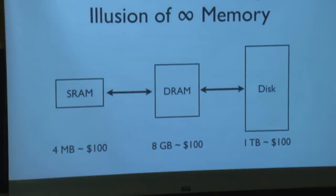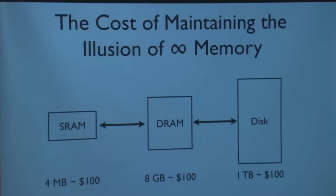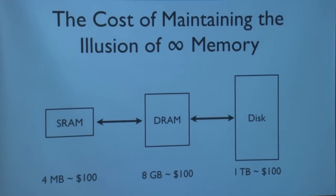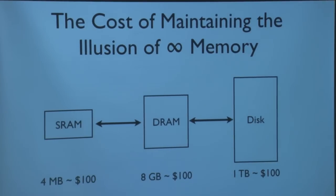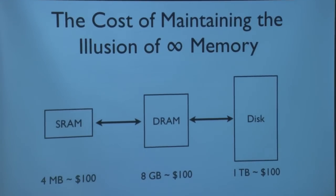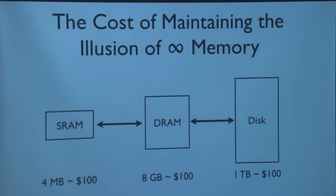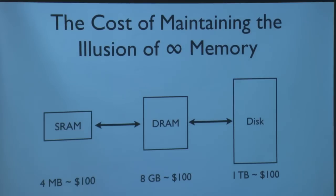Take a look at this diagram. We have disk — we have a lot of it, it's very prevalent and cheap: a terabyte is about $100. That same $100 in DRAM might only get you about 8 gigabytes. We don't have as much of that in our systems to keep costs down. That same $100 in SRAM — fast on-chip storage — might only get you 4 megabytes. So the problem is we want to provide this huge address space given these constraints.